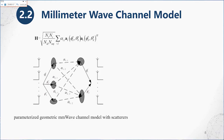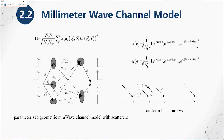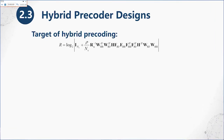The system channel can be described with this equation. In this paper, we adopt uniform linear arrays and the array response factor is given. We then consider the problem of hybrid precoder design. The target of hybrid precoding is to maximize the spectral efficiency over all possible solutions of precoder and combiner.